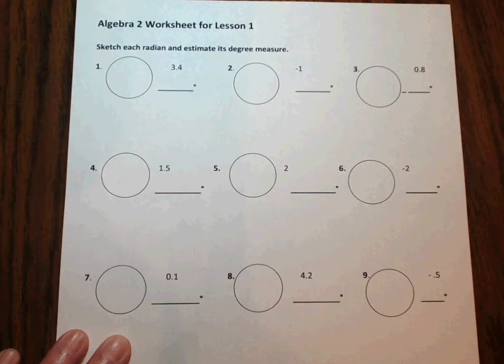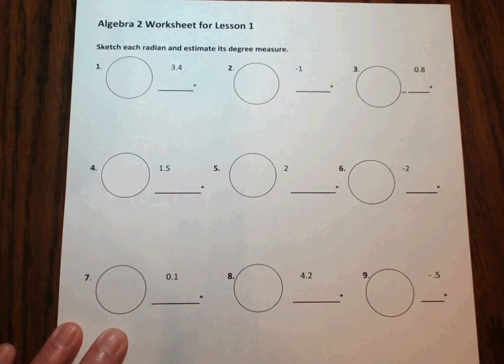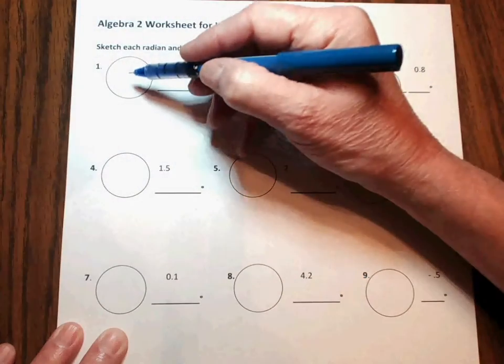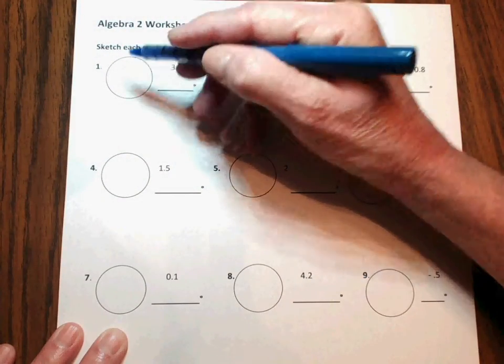This worksheet follows the definition of a radian. To work the first problem, first mark the center of your circle and draw a radius to the edge.